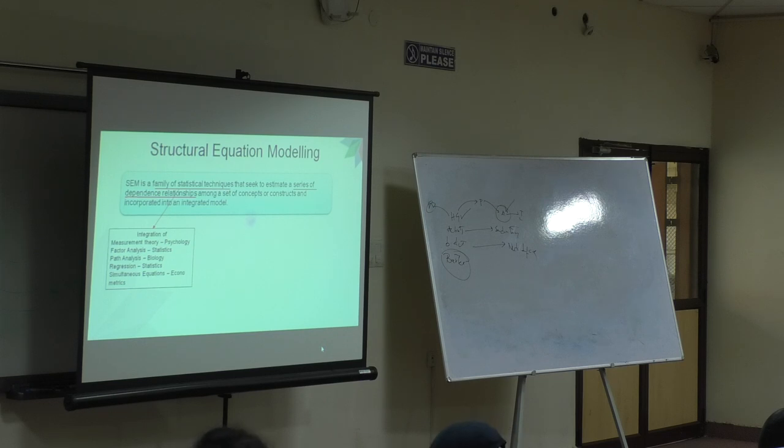Previously, we have only talked about a single dependent variable. In all forms of regression—simple regression, multiple regression, or even logistic regression—we have only talked about single dependent. Even in correlation, it's a single dependent. But now, we are going to talk about multiple dependent variables.